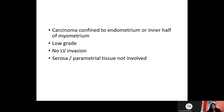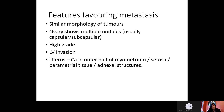Features favoring metastasis include similar morphology of tumors — usually high-grade with lymphovascular invasion. The ovary will show multiple nodules, usually capsular and subcapsular. In the uterus, the carcinoma will be in the outer half of the myometrium involving the cervix, parametrial tissue, and adnexal structures. Those features should favor metastasis.